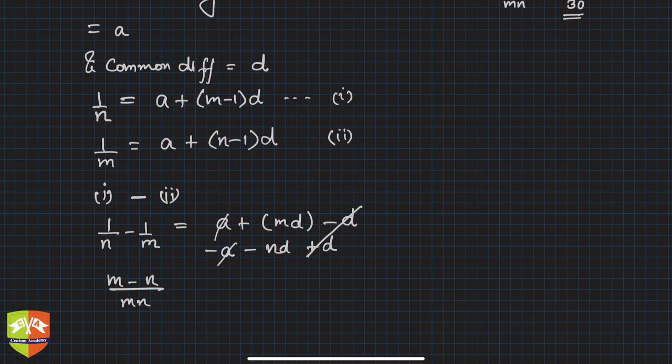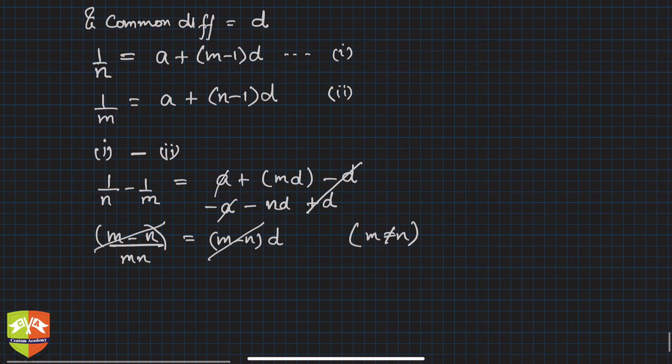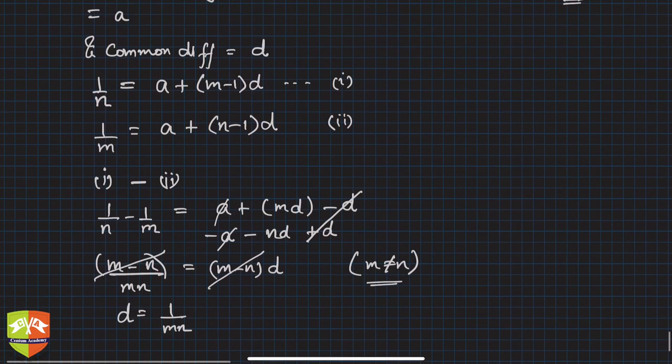And this is equal to (m-n)d, correct? So assuming m is not equal to n, right? Assuming m is not equal to n, then we can cancel this. If m is equal to n then we can't cancel this, please keep it in mind. So assuming m is not equal to n, hence d, what do I get? 1/(mn). So we found out d.